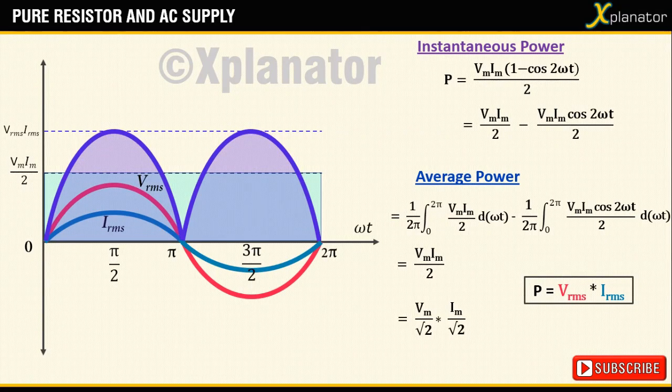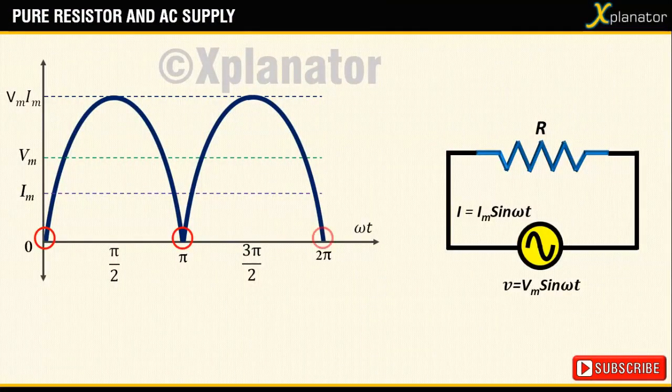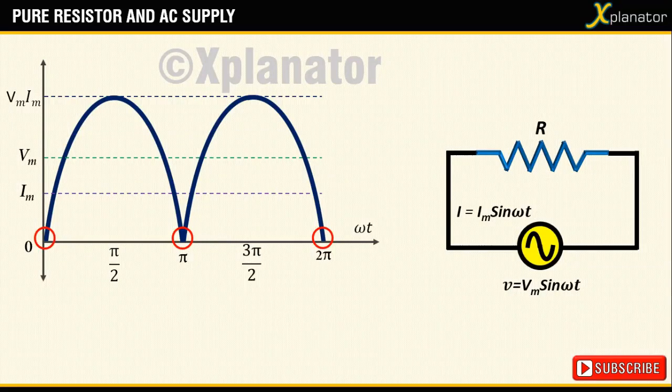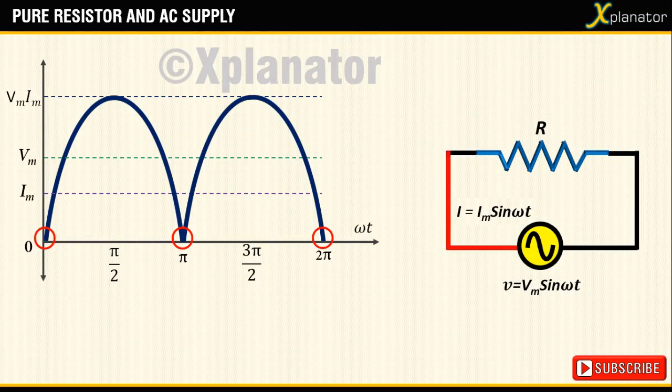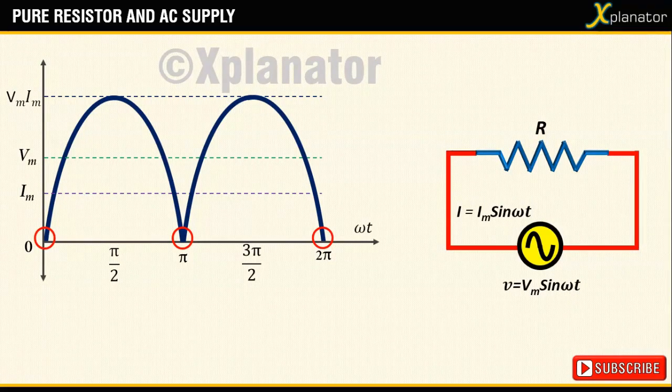The power plot is always positive except for 0, pi, and 2 pi when it drops to 0 momentarily. Positive power means that voltage source is constantly delivering power to the circuit, and it is consumed by the circuit.